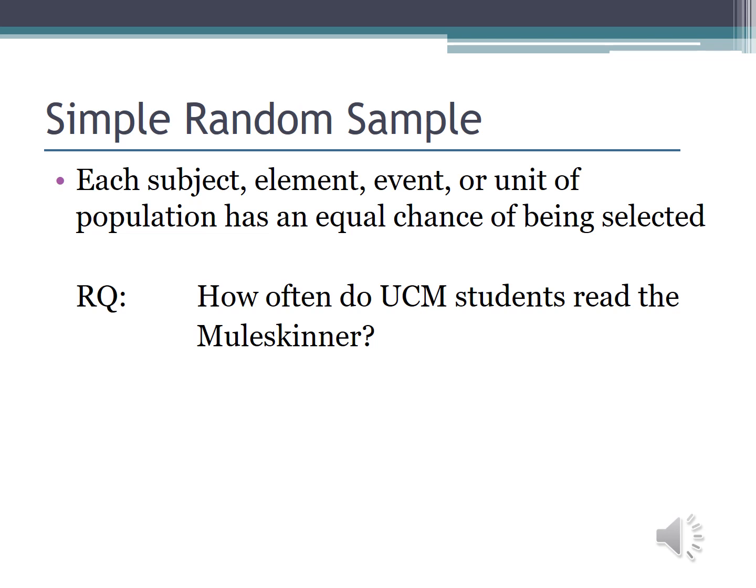But if my research question is how often do UCM students read the Mule Skinner, I'm going to want a random sample that's a little bit larger. Say I want a plus or minus three margin of error — I know I need 375 participants. I also know that if I only send the survey to 375 people, I'm not likely to get all 375 responses. In the social sciences, a 10% response rate is a pretty decent response, so I'm going to send my survey to 3,750 students. I can easily get the email list of students from Student Affairs and University Relations. This is called the sampling frame, or a complete list of units in the population. I can develop an online survey, go down the 14,000 students, and select every third person to send the email. Because I have randomly selected the students, I have a good chance of having a representative sample.